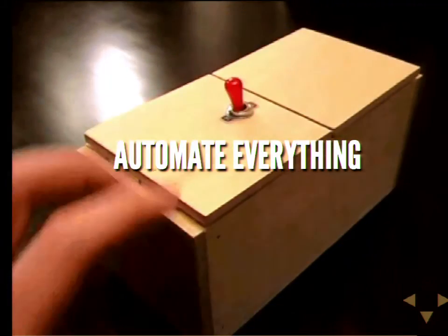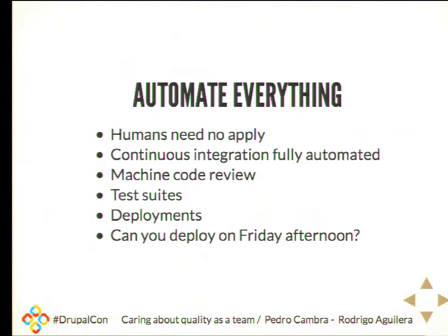Automate everything — that is related to what we were saying about not making the same mistake twice. You want to be vigilant about what processes are done by humans and what can be automated. Continuous integration is the main candidate to be automated — it's very easy, it can be scripted. The code review made by machines covers coding standards, complexity, and good practices. You want your machines to run the test suites.